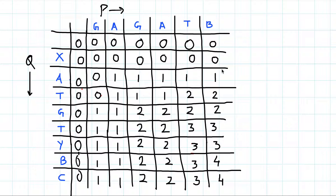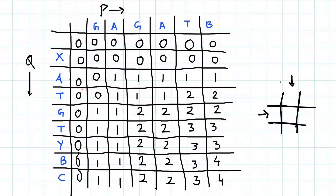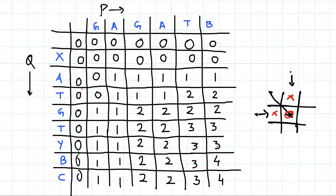Earlier we saw that while calculating the value of any cell, one row corresponds to one string and the columns correspond to the characters of the second string, and rows correspond to characters of the first string. For calculating this value we compare the character at each position. If they are equal we take whatever value is there and add one to it. But if the characters are not equal then we see these two cells and whichever value is maximum we put there.